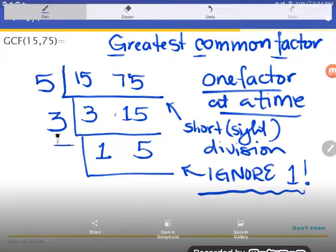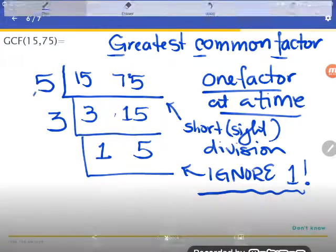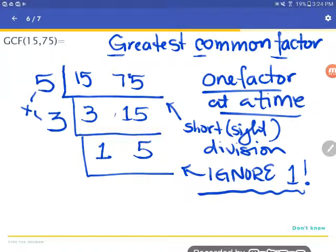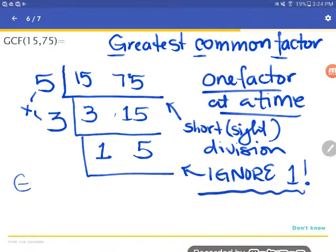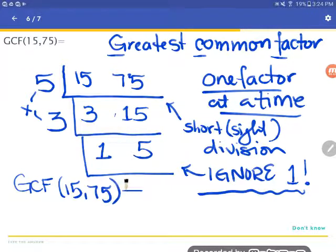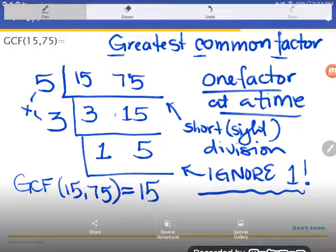What I found is that the two prime factors the GCF has in common are five and three. Since I pulled them apart by dividing, I put them back together by multiplying — division's opposite. So the GCF is 5 times 3, which is 15. I love this method, especially when numbers get big — it's way better than making a nasty rainbow with ugly numbers.